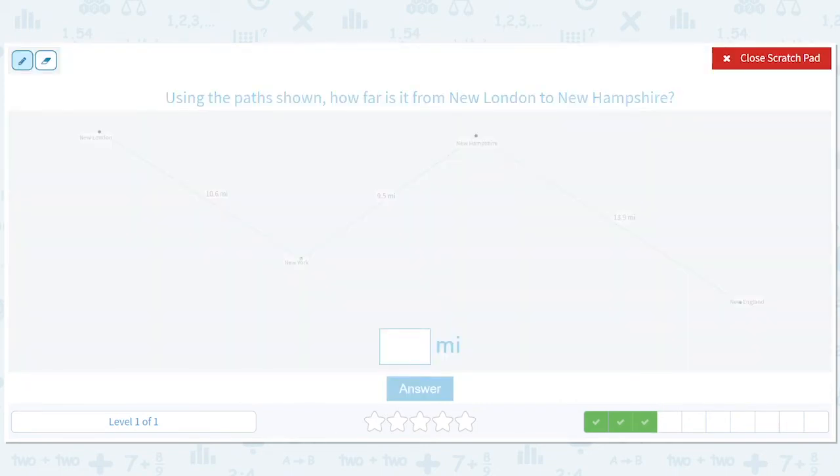Using the path shown, how far is it from New London to New Hampshire? There are no question marks here. This is just adding everything. New London to New Hampshire. So you just add these numbers. 10.6, 9.5. 10 plus 9 is 19. 0.6 plus 0.5 is 1.1. 19 plus 1.1 is 20.1.